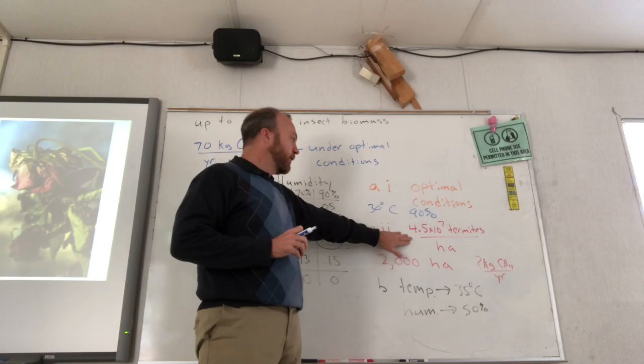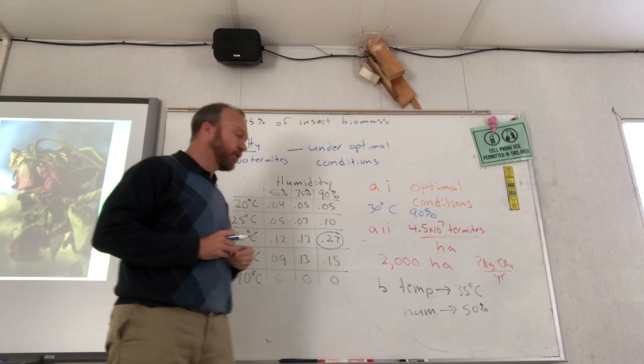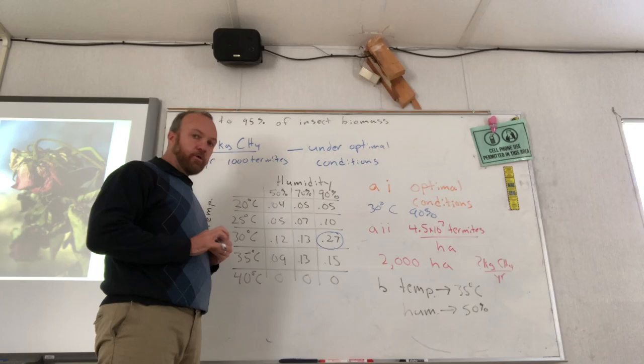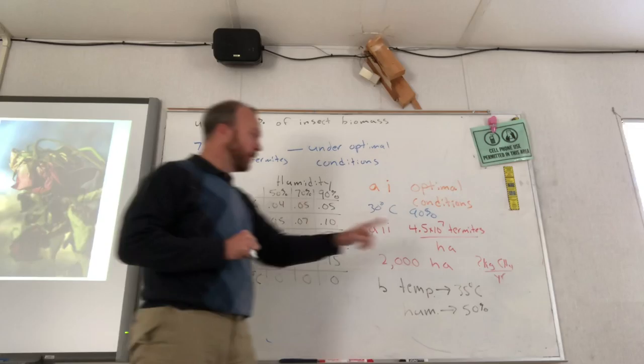The part that I really want to focus on though is the second part where it gives you some additional information. It tells you that in this particular rainforest, there are 4.5 times 10 to the 7th termites per hectare, and it's a 2,000 hectare forest. And what I ask you to find is how many kilograms of methane that the termites in this forest would produce per year. So you may at first be confused. So what we want to do is we want to look at our information. And I always like to start with what I'm looking for. Begin with the end in mind.